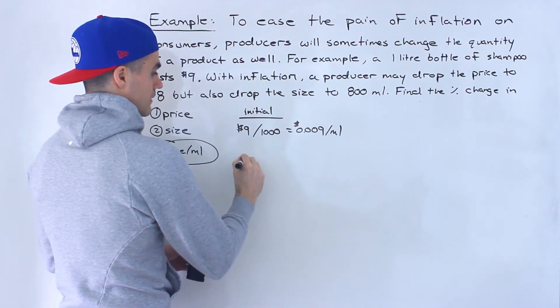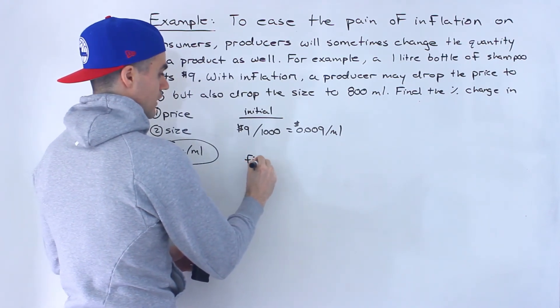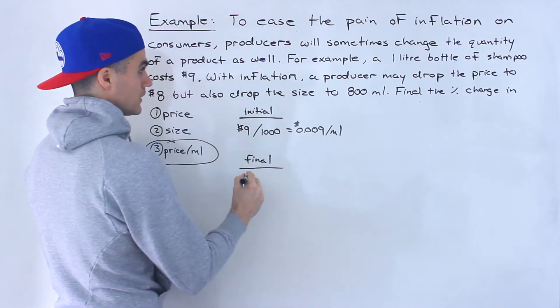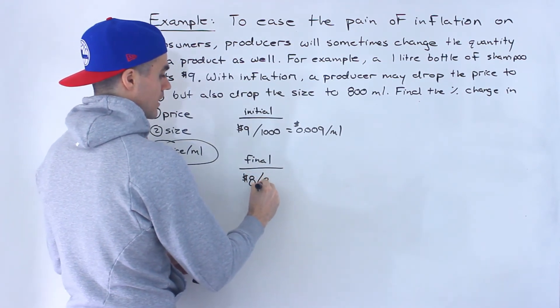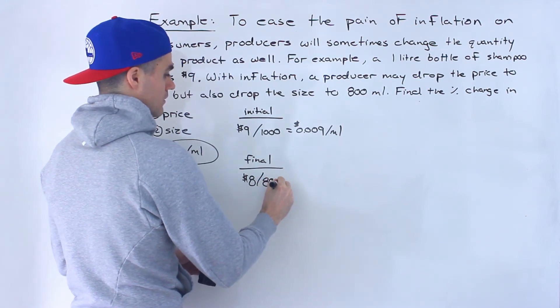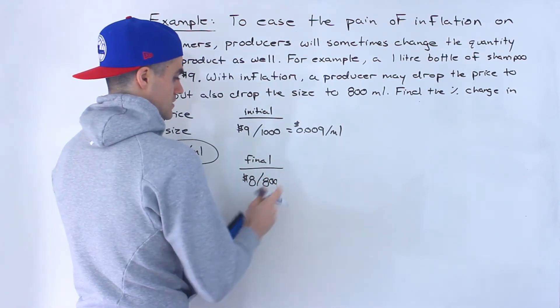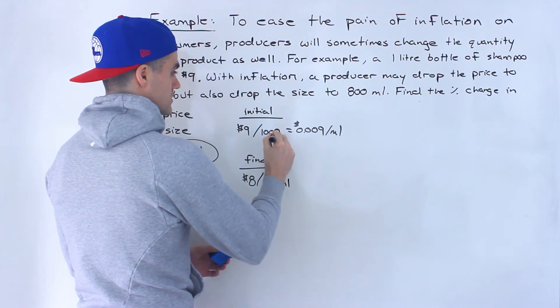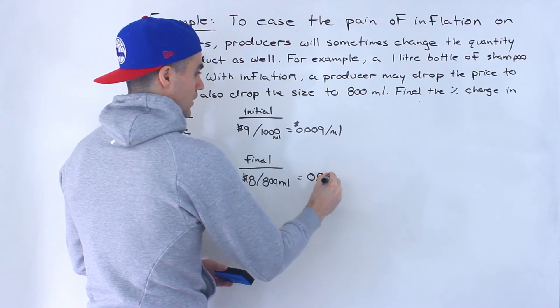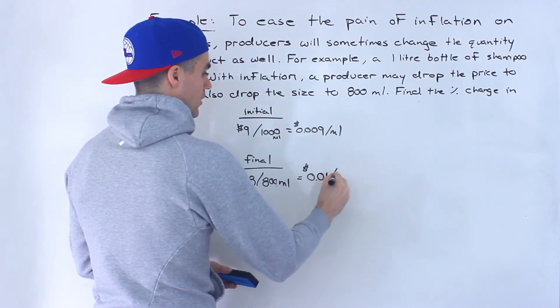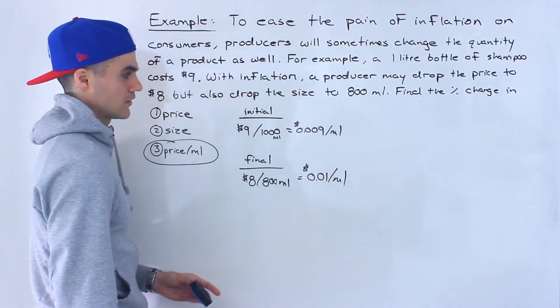So when we divide this, we would end up with 0.009 dollars per milliliter. And then after inflation, the final price per milliliter would be $8 divided by 800. And when we do that, we would end up with 0.01 dollars per milliliter.